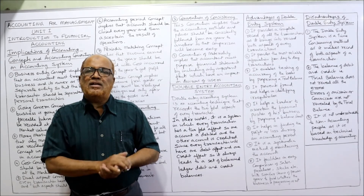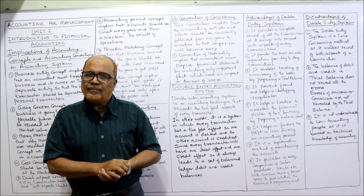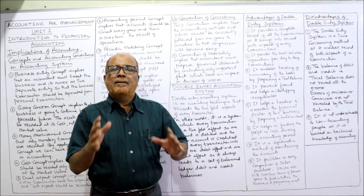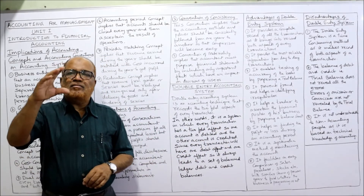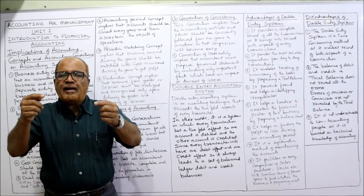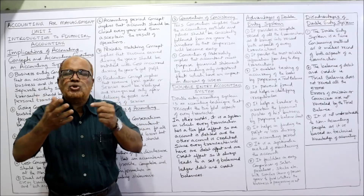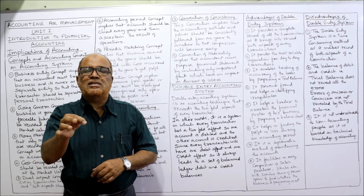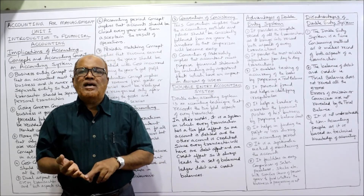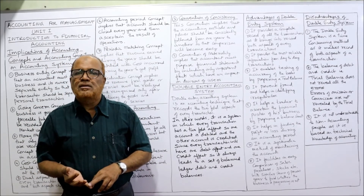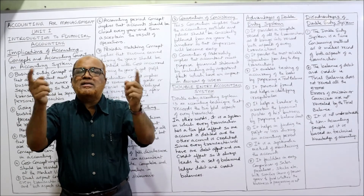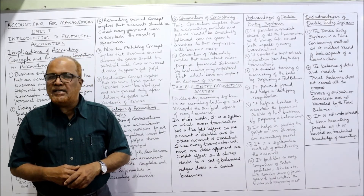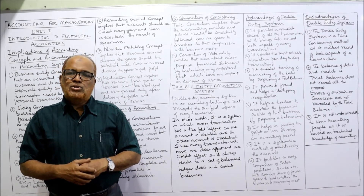So the first disadvantage is it is time-consuming and requires perfect knowledge. The second disadvantage is that the trial balance of debit and credit balances does not reveal all errors. When we prepare the trial balance before making financial statements and it tallies, it prima facie shows no errors — but in reality there may still be some errors even if the trial balance is tallied.